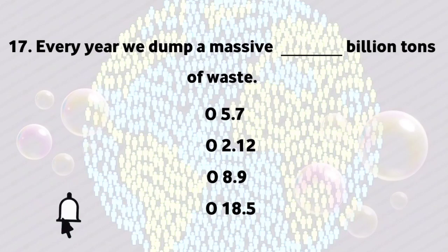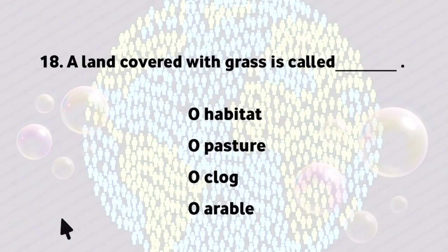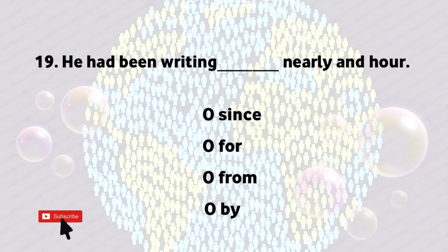Every year, we dump a massive 2.12 billion tons of waste. A land covered with grass is called pasture. He had been writing for nearly an hour.